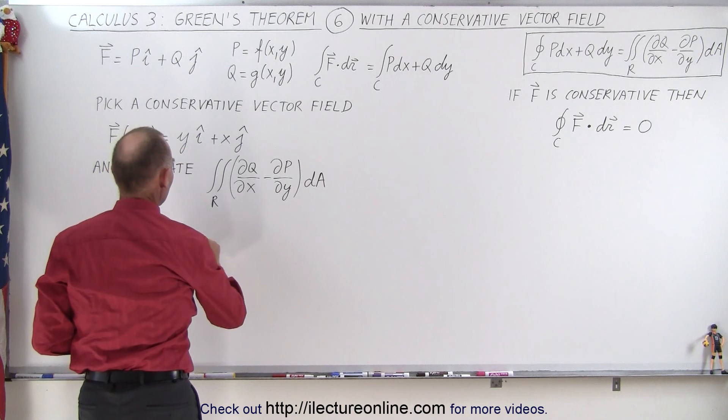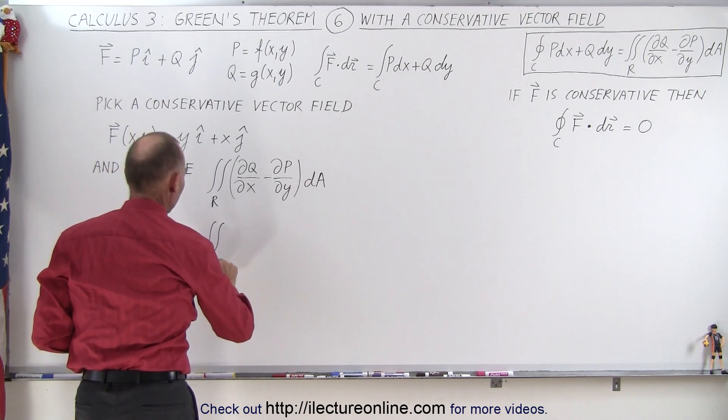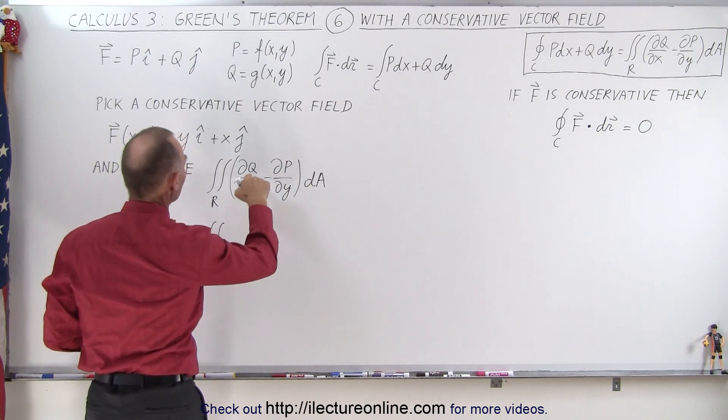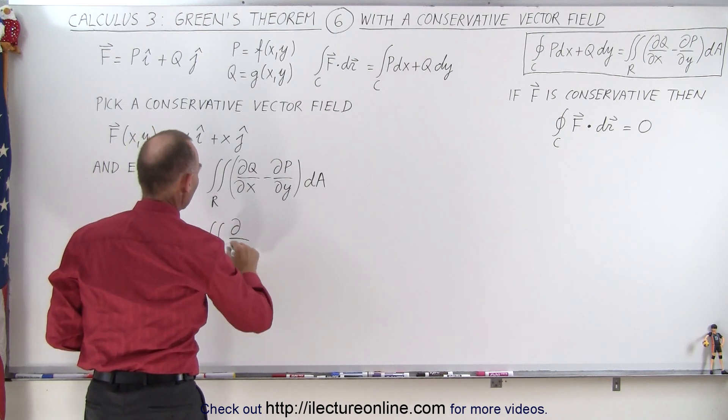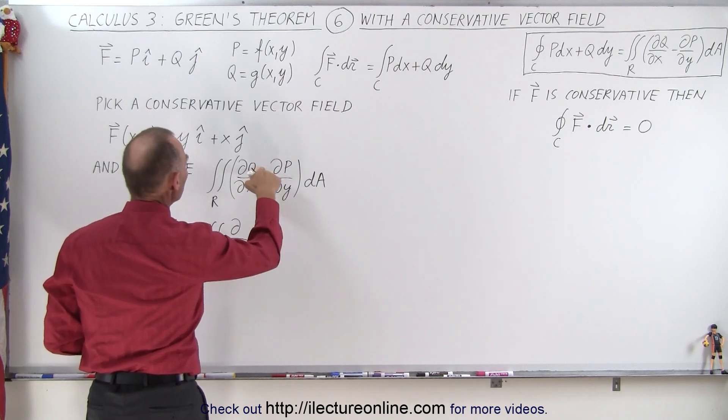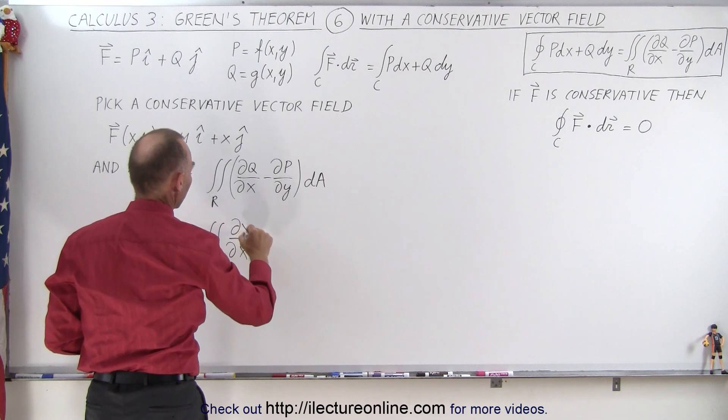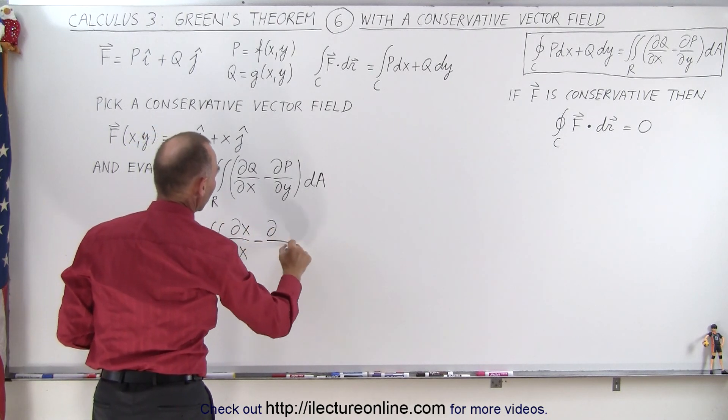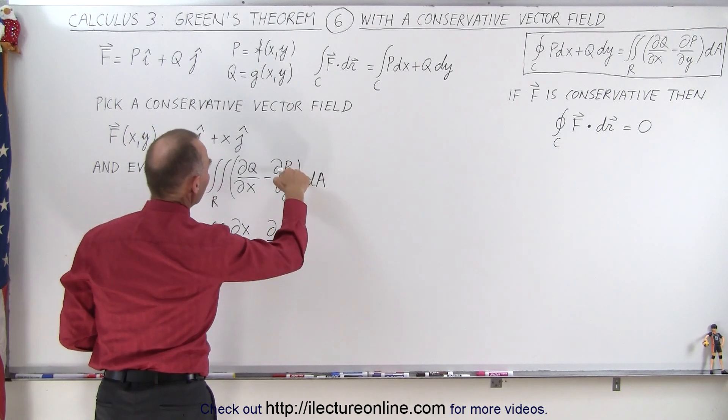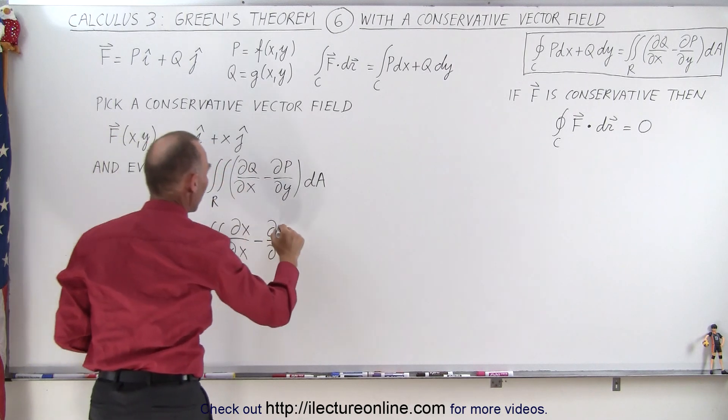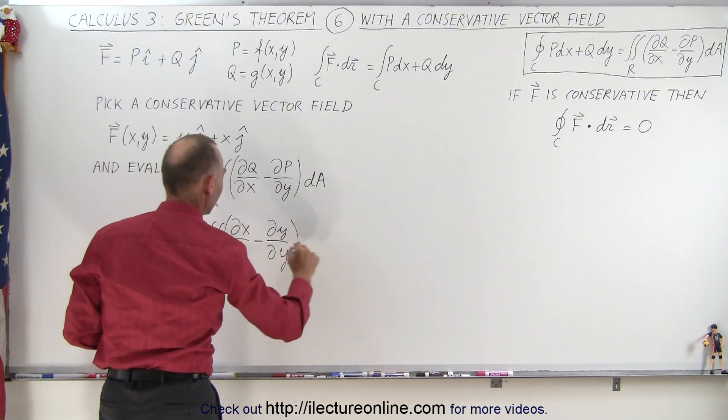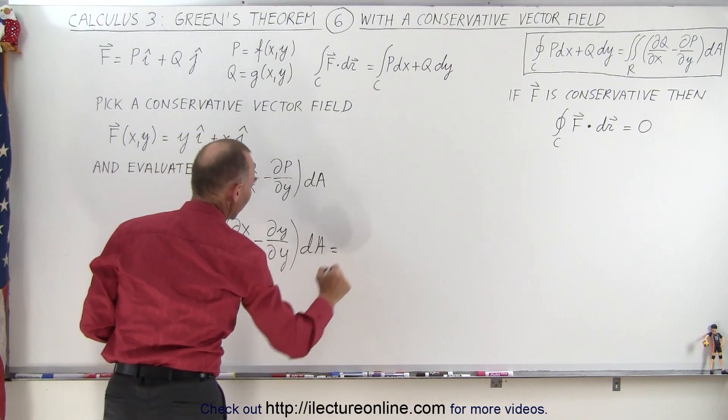This becomes equal to the double integral over the region enclosed by the line integral of the partial with respect to x of q—now q here is x—minus the partial with respect to y of p, and in this case p is equal to y, times dA, and I think you're beginning to see where we're getting.